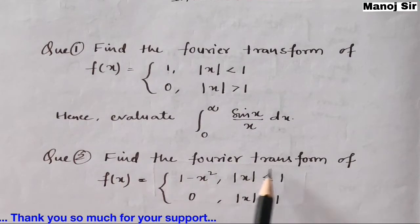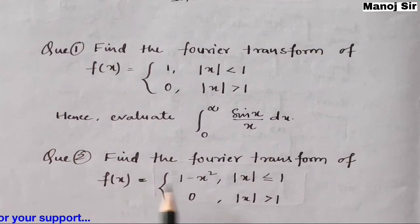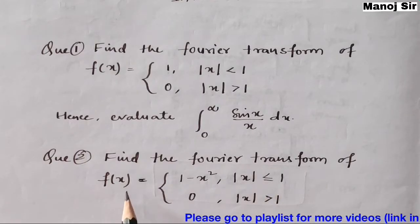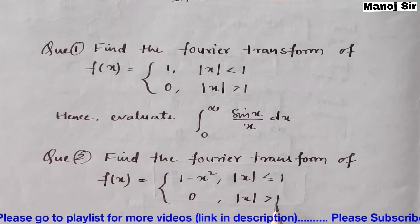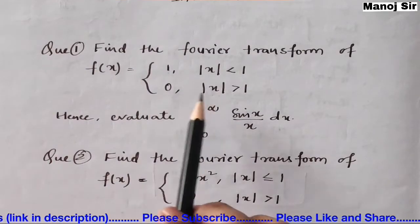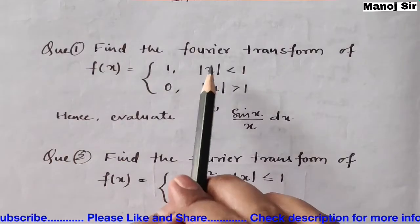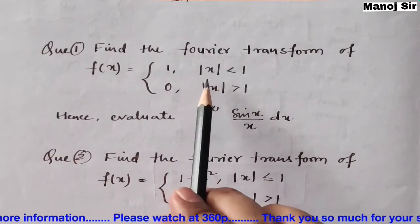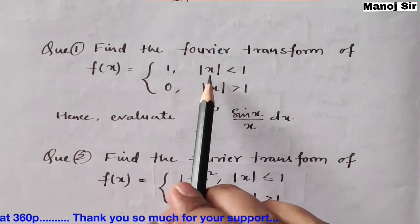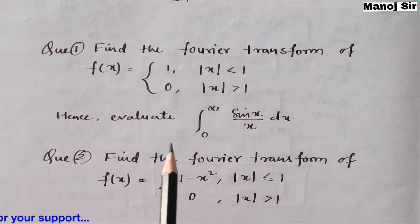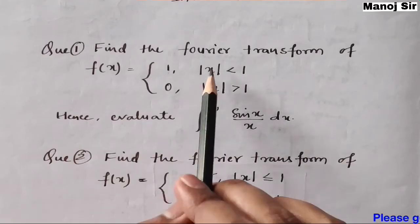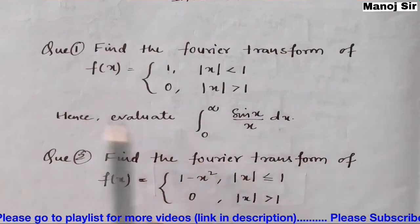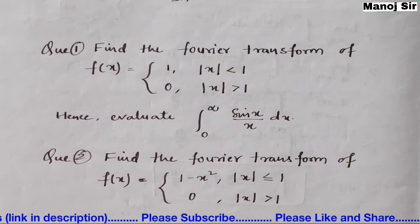The second problem is also very important: find the Fourier transform for f(x) equals 1 minus x squared when mod of x is less than or equal to 1, and f(x) equals 0 when mod of x is greater than 1. In both problems you can see we have mod of x, meaning x may be positive or negative. These two problems are very important and will be solved in video number two and video number three. Thank you.